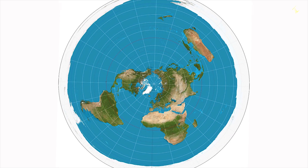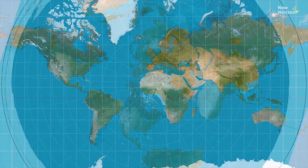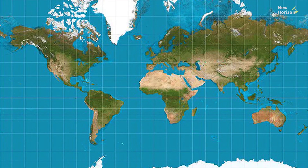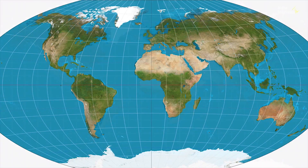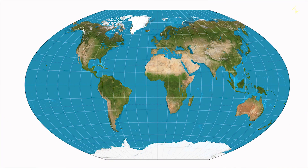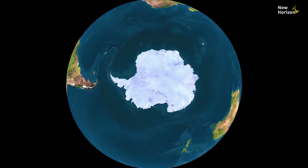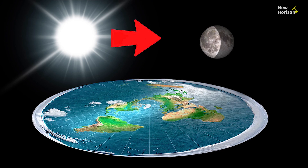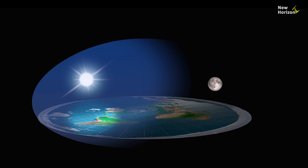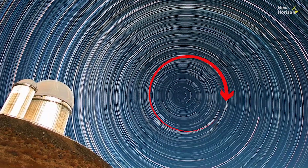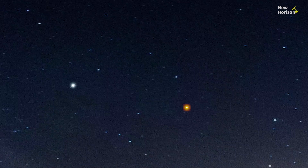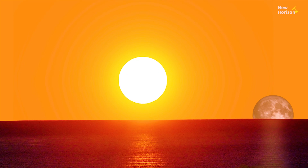The flat earth map they use to support their theory is just a projection of the globe map onto a flat surface. This map is not necessarily wrong, but it distorts the size of Antarctica. Let's debunk the flat earth theory with some common points, without using complex scientific explanations.